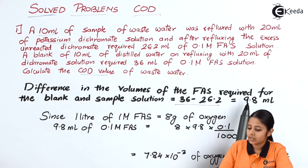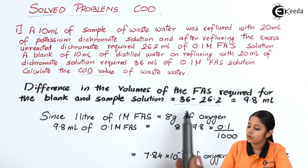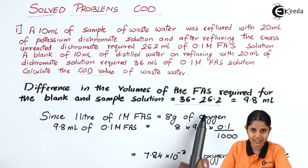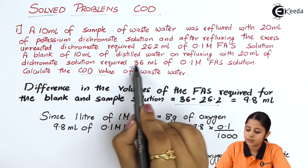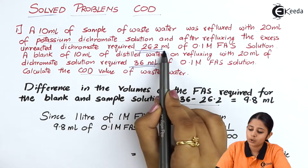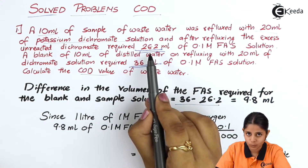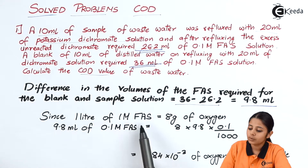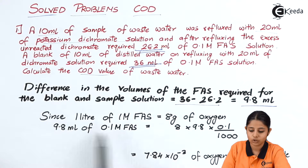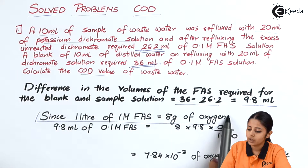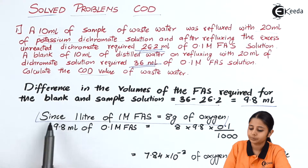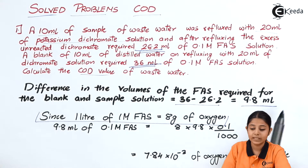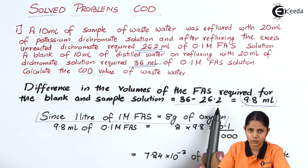The difference in volumes of FAS required for the blank and sample is 36 minus 26.2, giving 9.8 ml. Since 1 litre of 1 molar FAS always requires 8 grams of oxygen — this is the standard value used in almost all questions — we now apply it to the 9.8 ml of 0.1 molar FAS we have.